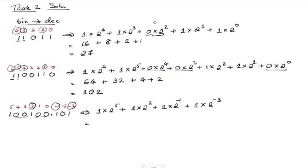Calculating: 2 to the power of 5 is 32, plus 2 to the power of 2 is 4, plus 2 to the power of minus 1 is 0.5, plus 2 to the power of minus 3 is 0.125. When you add all of this you get the value 36.625.